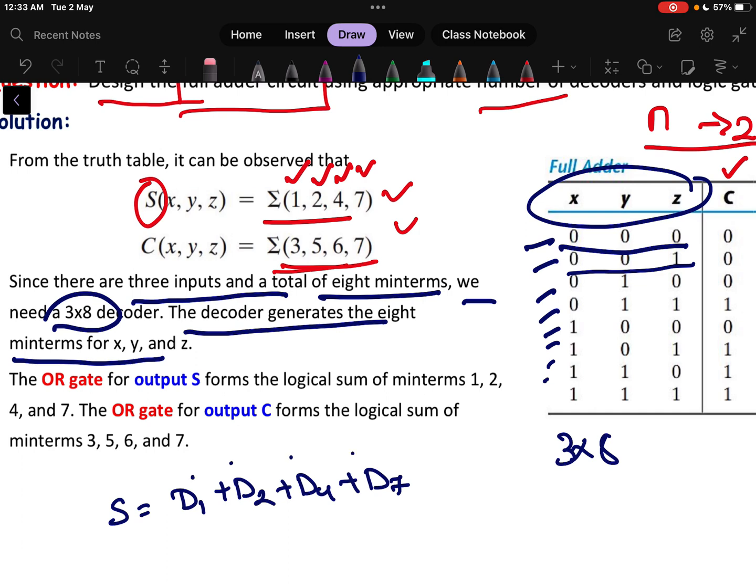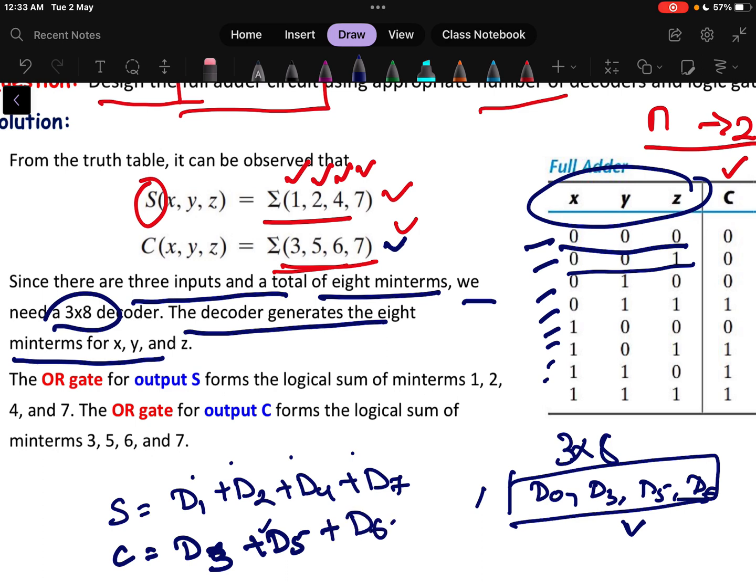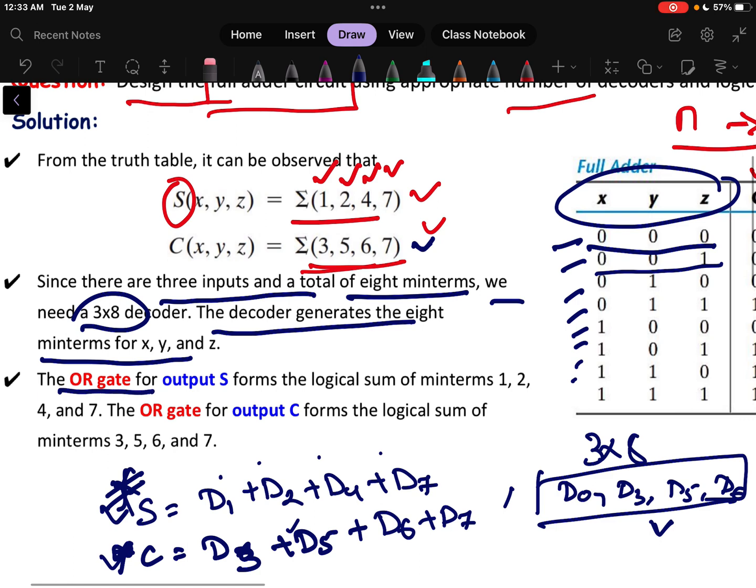Sum is generated by only these four terms. Next, other terms like d0 is there then d3 then d5 and d6, all these numbers at output will be there but it will not be the sum. Sum is only these four numbers. Sum is available only at these four outputs. Similarly, if I consider the carry then what will be carry? Carry will be equals to d3 plus d5 plus d6 plus d7. This will be my carry. Now I can understand that from the one decoder I need one output which will give me the sum value, I need another output which will give me the c value, that means two output I need but for a decoder there are eight output. The OR gate of the output S forms the logical sum of the minterms 1, 2, 4 and 7 and OR gate of output C forms the logical mean terms of 3, 5, 6, 7.